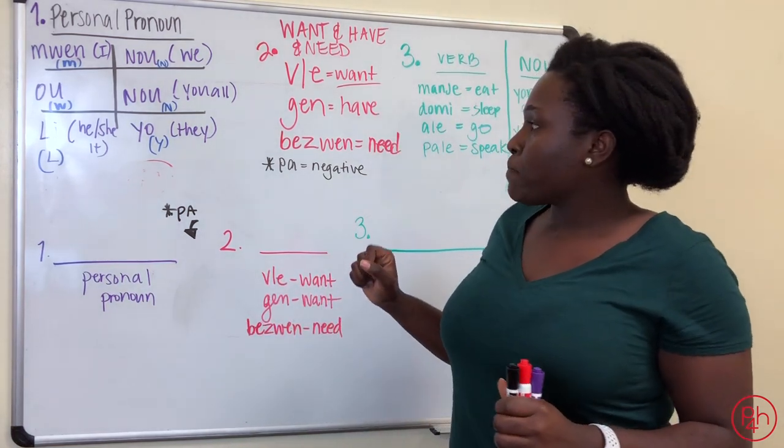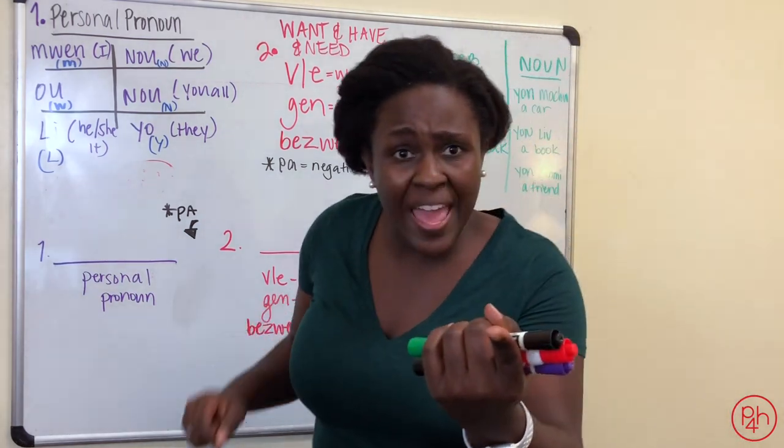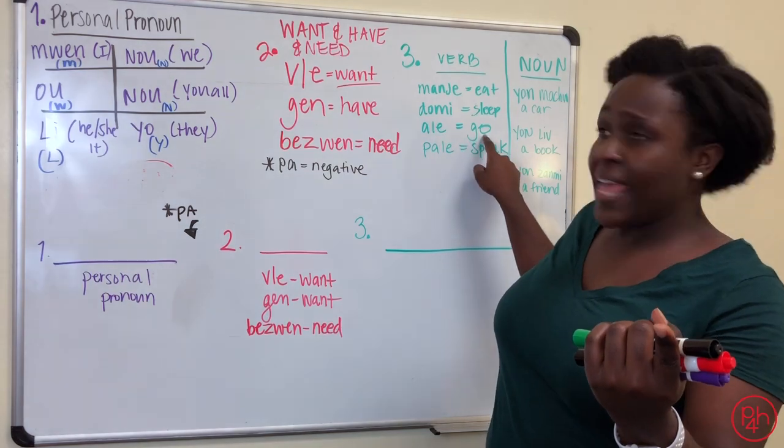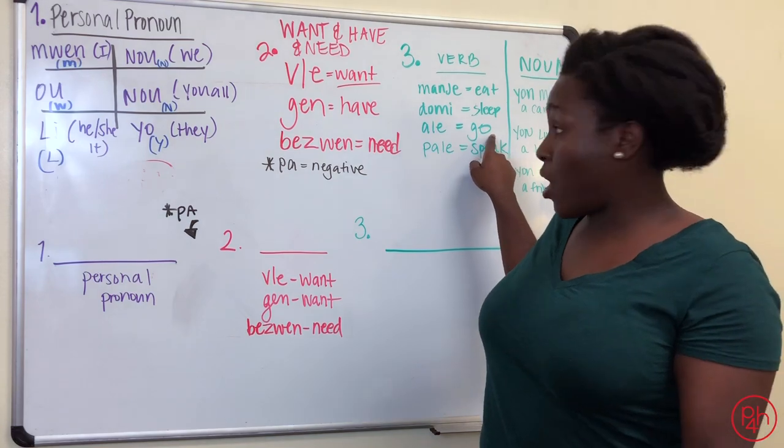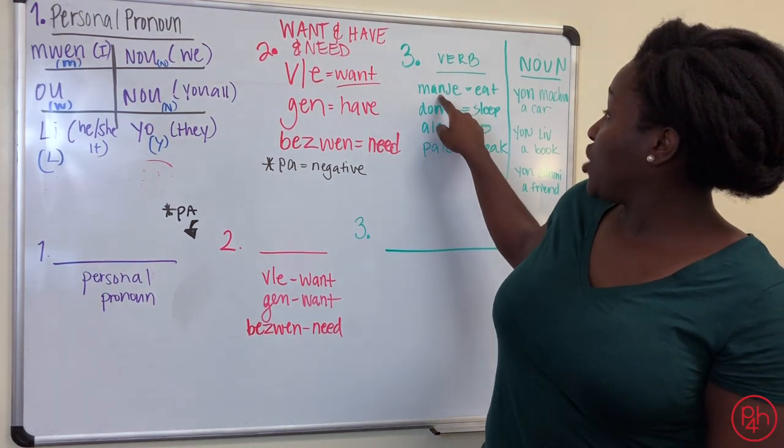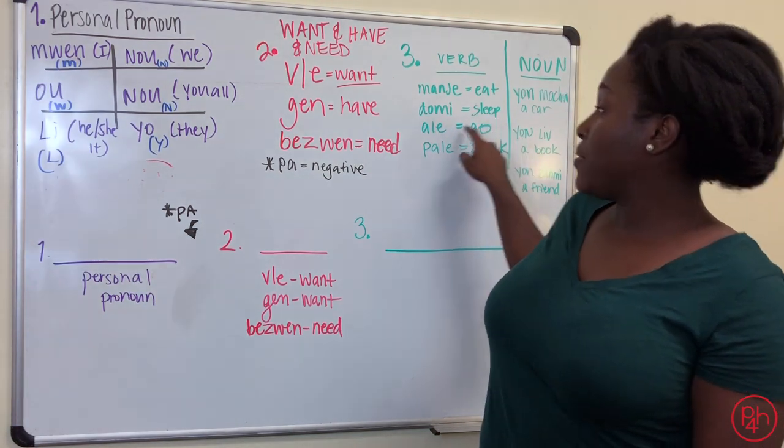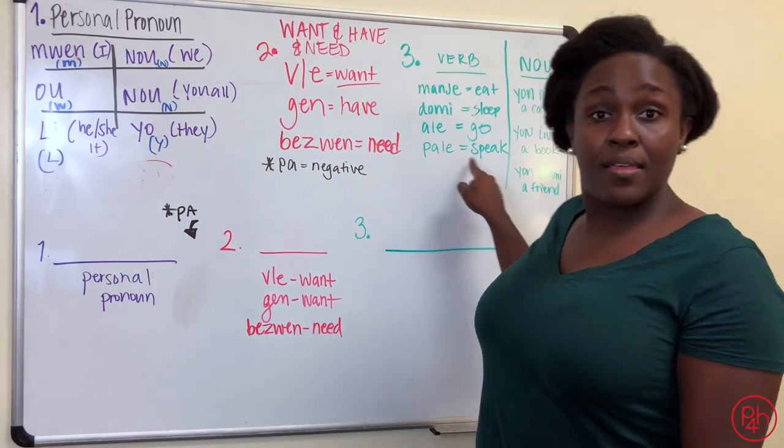So if I say, u bezwen, u bezwen aller? U bezwen aller? That means you need to go. You need to go. So again, manger is to eat. Dormi, sleep. Aller, go. Parler is to speak.